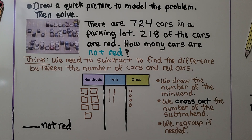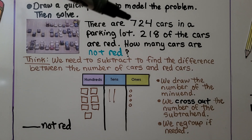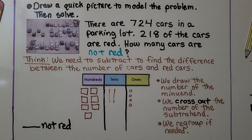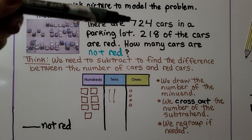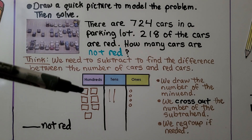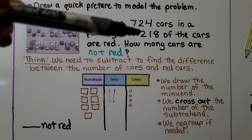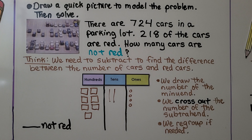It's telling us to draw a quick picture to model the problem and then solve. It says there are 724 cars in a parking lot and 218 of the cars are red. How many cars are not red? We need to subtract to find the difference between the number of cars and red cars. We draw 724 as 7 hundreds, 2 tens, 4 ones. If we take away 218, we'll know how many were not red.